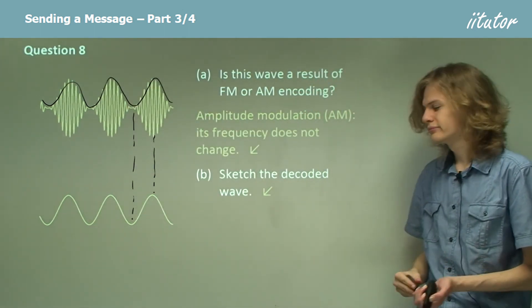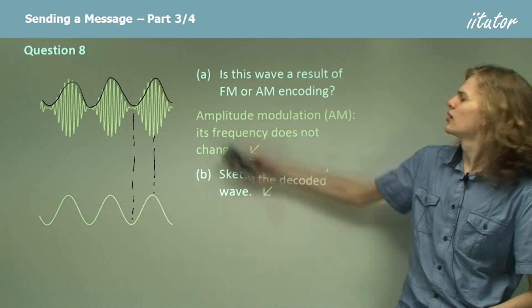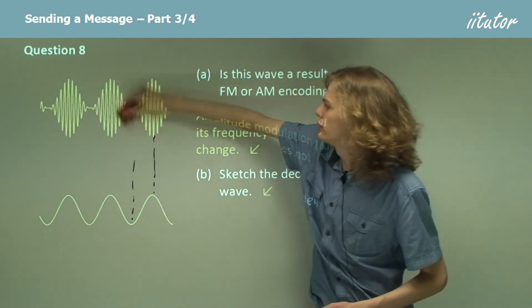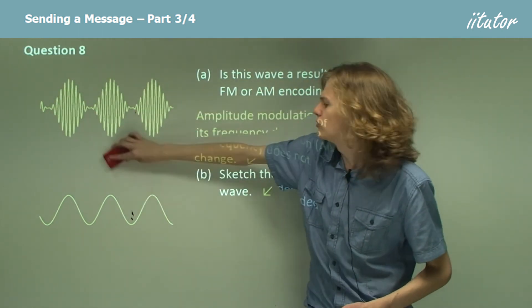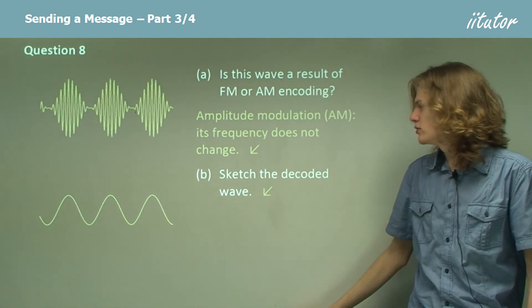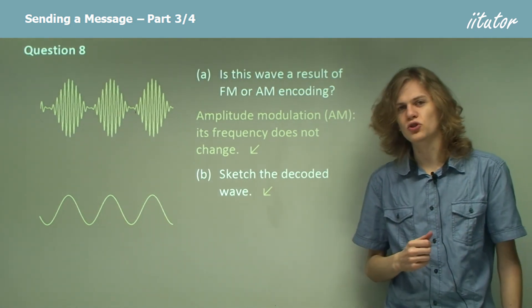The way that radios managed to make this decoding used to be with a rectifier, which is a small piece of germanium. These days we use semiconductors and transistors to do the same job.